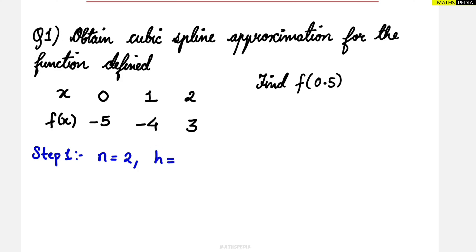Next, define h — it is the width of the interval. The intervals will be equal. Based on x, you can write the h value. If you see, zero to one the gap is one, one to two the gap is one — so everywhere they give you the same equal interval. That's how you define h. So h is nothing but the width of the x interval, which is one.